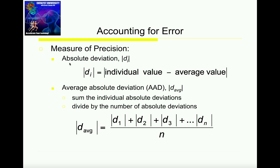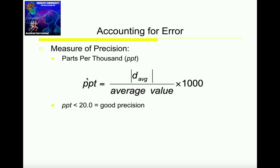Then we calculate each individual absolute deviation and take the average of those absolute deviations. Then to calculate the parts per thousand, we take the average absolute deviation and divide by our initial average and multiply by 1,000. If our parts per thousand is less than 20.0, it's good precision. If it's greater than 20.0, we have not so good — or even bad — precision.